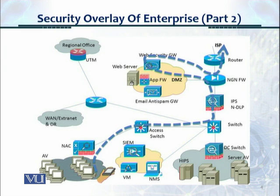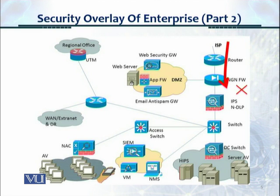This next flow shows traffic that would be blocked by the NGN firewall. This is unauthorized traffic coming in from the ISP to the router, trying to go directly to a data center server. It does not have authorization, and it is eventually blocked by the NGN firewall — there's an access list, and it's blocked.